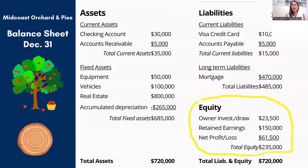Assets minus liabilities leaves us with equity, and equity is tracked in three major accounts. The first is owner's investment and owner's draw. When you open a business and put in your own personal funds, that investment gets tracked because it's your money — part of this business that you own. Many owners also take money out, called an owner's draw. Unless you are an employee of your business, the way you get paid is by taking money out of the business bank account to pay your personal expenses, and that gets reflected in the owner's draw line.